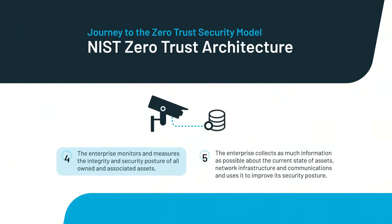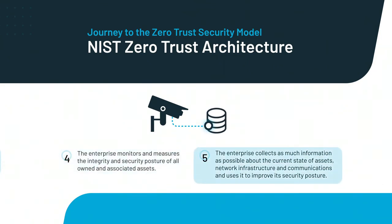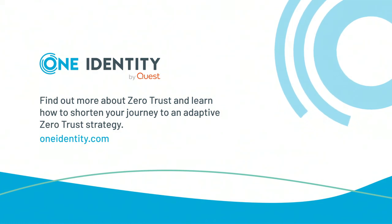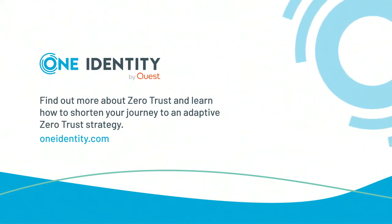The organization monitors and measures integrity and security posture for all assets. The organization logs all information about the current state, network infrastructure, and communications. One Identity can help you harden your security posture. Find out more about how you can secure the organization, support digital transformation, drive operational efficiencies, and enable compliance.